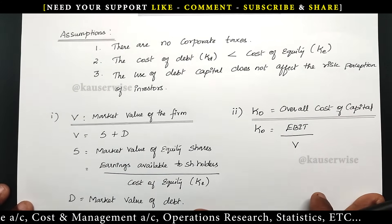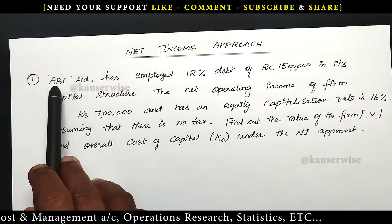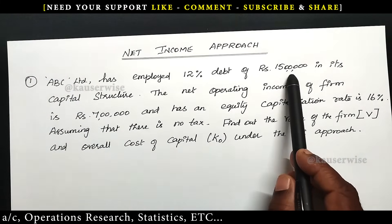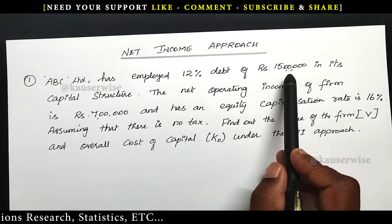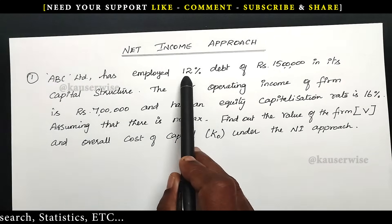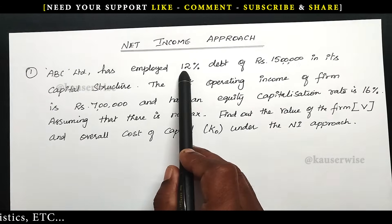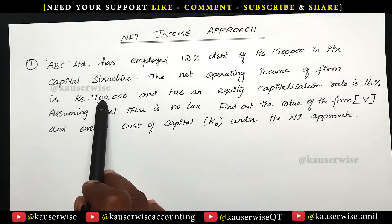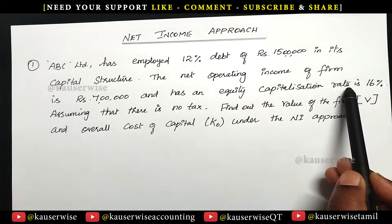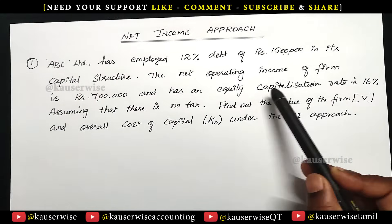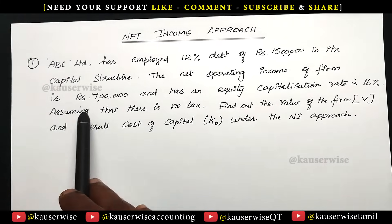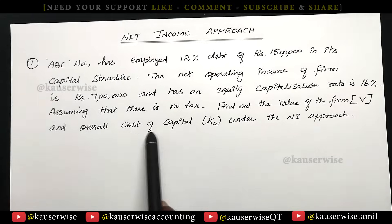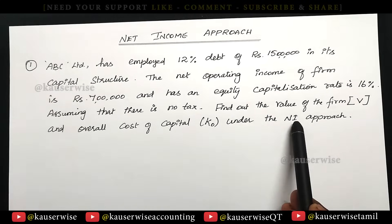Now let's see the numerical problem. ABC Limited has employed 12% debt of ₹15 lakhs in its capital structure. The net operating income of the firm is ₹7 lakhs and it has an equity capitalization rate, that is KE, of 16%. Assuming there is no tax, find out the value of the firm and overall cost of capital under the net income approach.